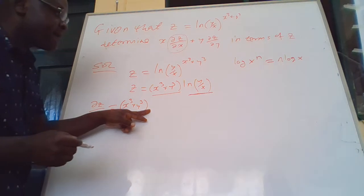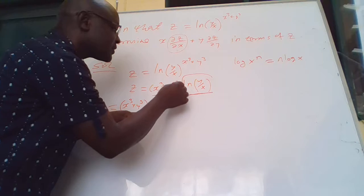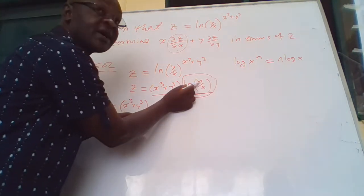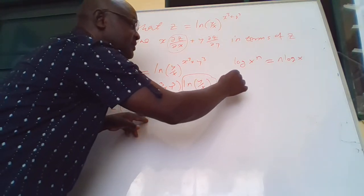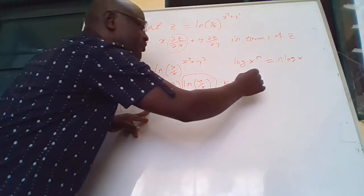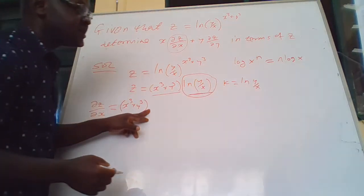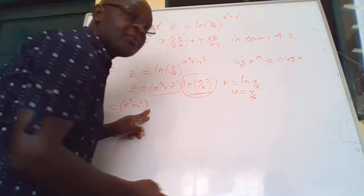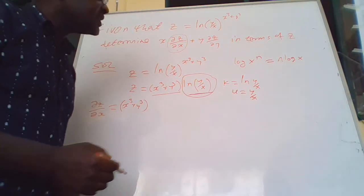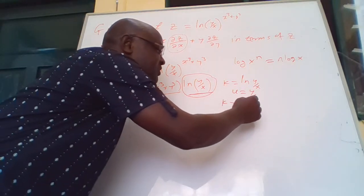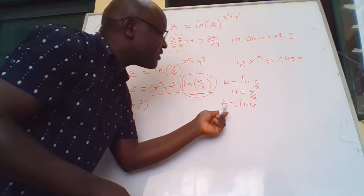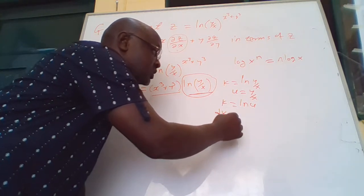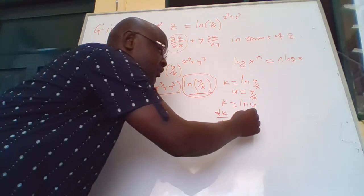Differentiating ln(y/x) requires chain rule. Let k = ln(y/x) and let u = y/x, so k = ln(u). Then dk/du = 1/u.